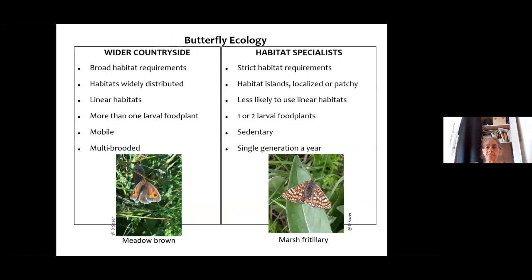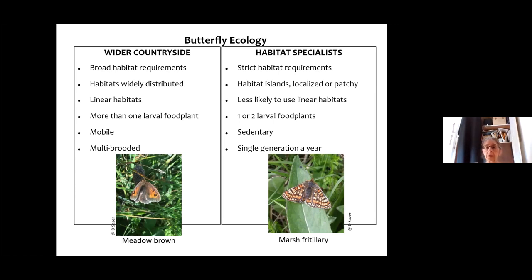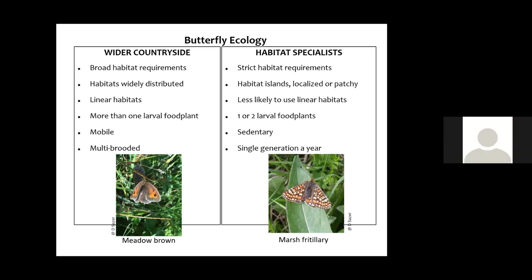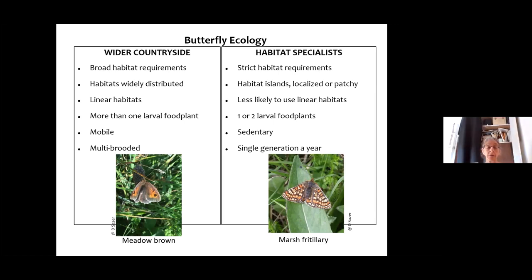One of the main ways of looking at butterfly ecology is the division between wider countryside species and specialists. Wider countryside species have broader habitat requirements, their habitat is fairly plentiful, they use linear habitats to disperse between patches, they have a range of larval food plants like several different grass species, they're very mobile and fast-flying, and they tend to have more than one brood a year — all things that help them to prosper.